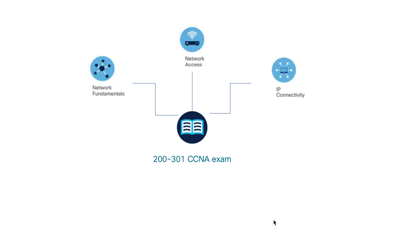The third domain is IP connectivity, which includes Layer 3 features such as the routing table, components of the routing table, and how a router makes a forwarding decision. Routing types such as static routing and dynamic routing, which includes the OSPF protocol.